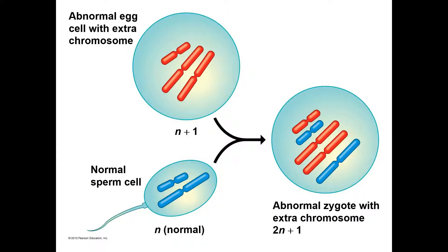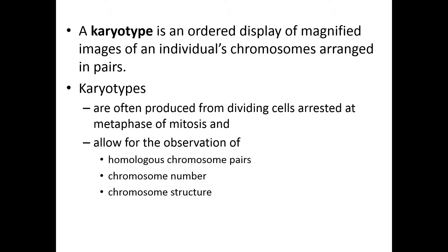If a normal sperm cell has two chromosomes — the proper complement — and fertilizes an egg cell with an abnormal number of chromosomes, three, then combined you get five total chromosomes. You should only have two pairs, but in this instance you have an extra third copy of one of your chromosomes.